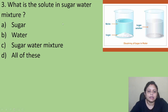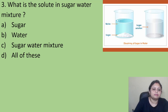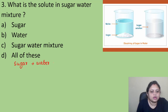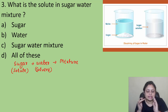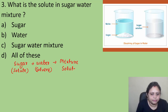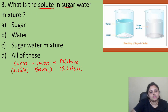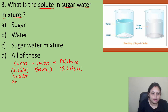Coming to the next question: what is the solute in a sugar-water mixture? In a sugar-water mixture, we take sugar and mix it with water. Sugar is present in the smaller amount, so we call it the solute, and water is present in the larger amount, so we call it the solvent. When the solute is dissolved in the solvent, the solution is formed. So the correct answer is Option A, that is sugar, because it is present in the smaller amount.